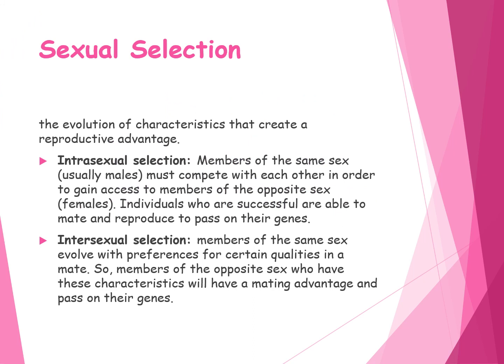Sexual selection is the idea that characteristics that have led to reproductive success will be passed on to future generations. Those characteristics have evolved over time, so anything deemed attractive to members of the opposite sex will be passed on to future generations and offspring, and those characteristics will become more exaggerated throughout the gene pool as time goes on. There are two main types: intra and inter.